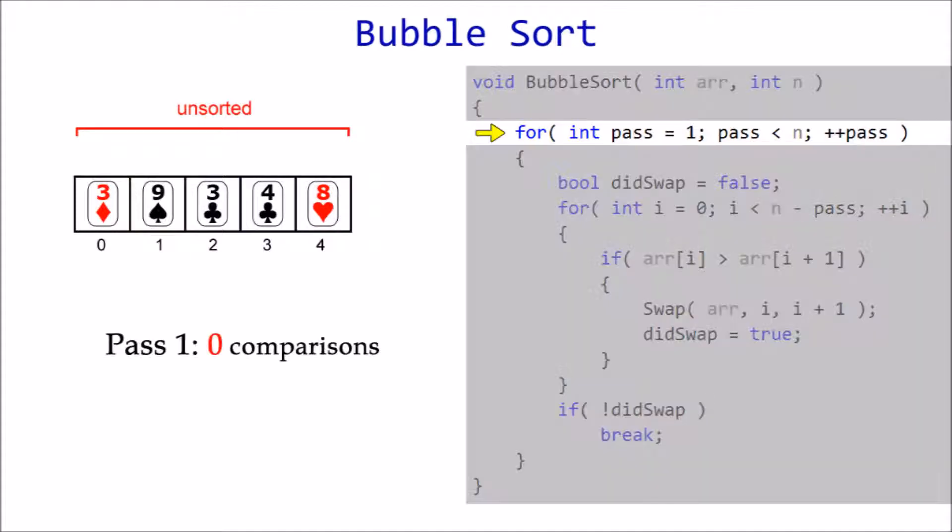The outer loop will run n minus one times, from one to n minus one. Why not n times? Because remember, the last remaining element doesn't require a pass.